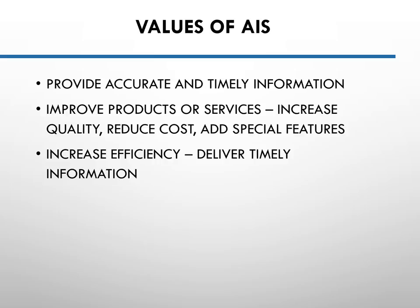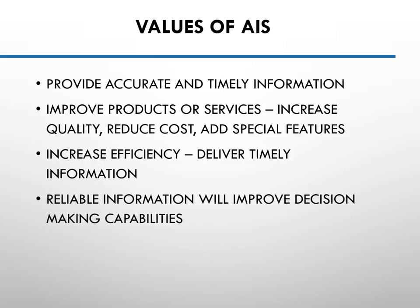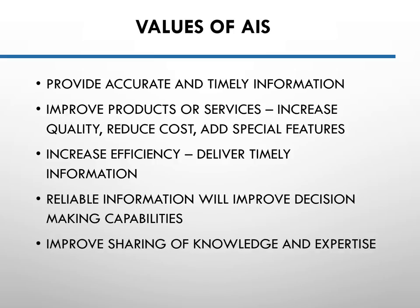AIS will also increase efficiency, especially when information is delivered on time and accurately. Decisions will be more improved because the information provided is accurate and reliable. Additionally, an accounting information system will improve the sharing of knowledge and expertise — for example, knowledge from a marketing or sales department can be shared more easily with production departments via the AIS.